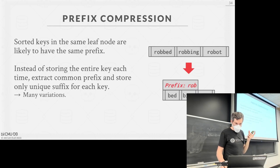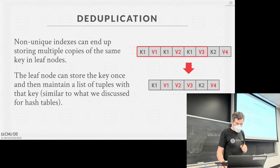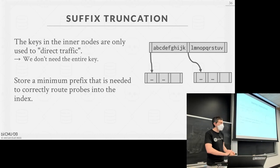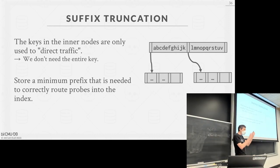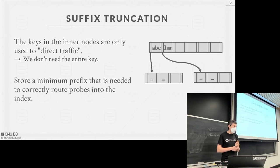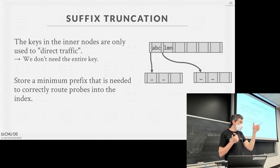Prefix compression: if you have the same key repeated, store it once instead of duplicating it. Suffix truncation: in inner nodes (guideposts), you don't always need the entire key — you just need the minimum prefix sufficient to discriminate left vs. right. This saves space, though if two strings share a prefix like ABC you'd need to extend it.